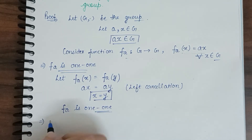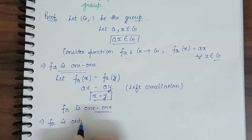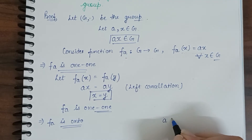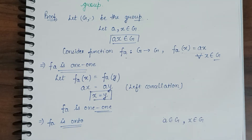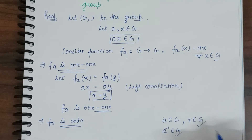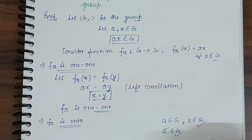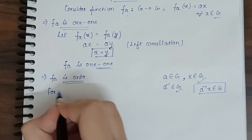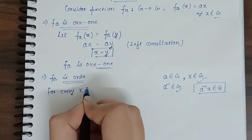Now, we have to prove that the function F_A is onto. We have to prove that for element A belonging to G and element X belonging to G, A inverse also belongs to G. If we apply closure to these two elements, then we can write A⁻¹X belongs to group G. So, for every X belonging to G: